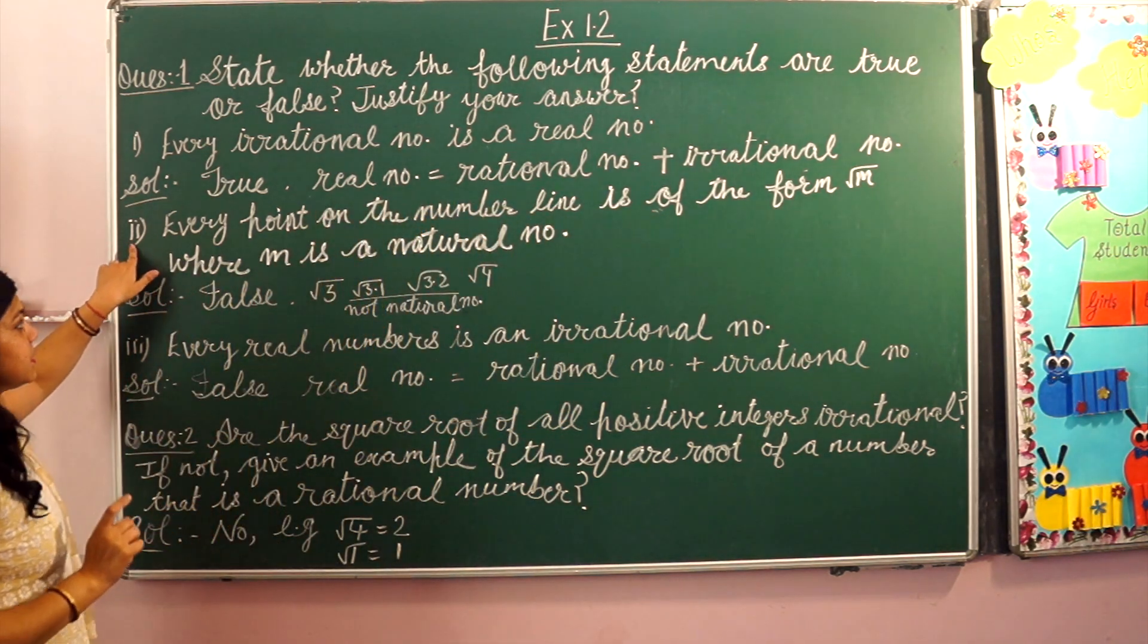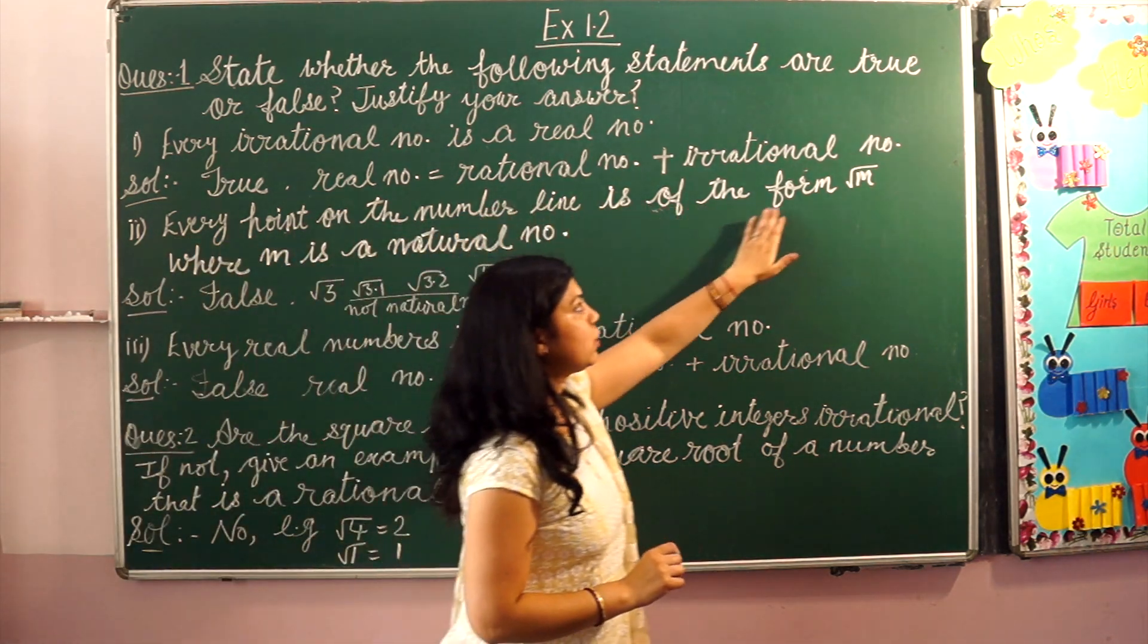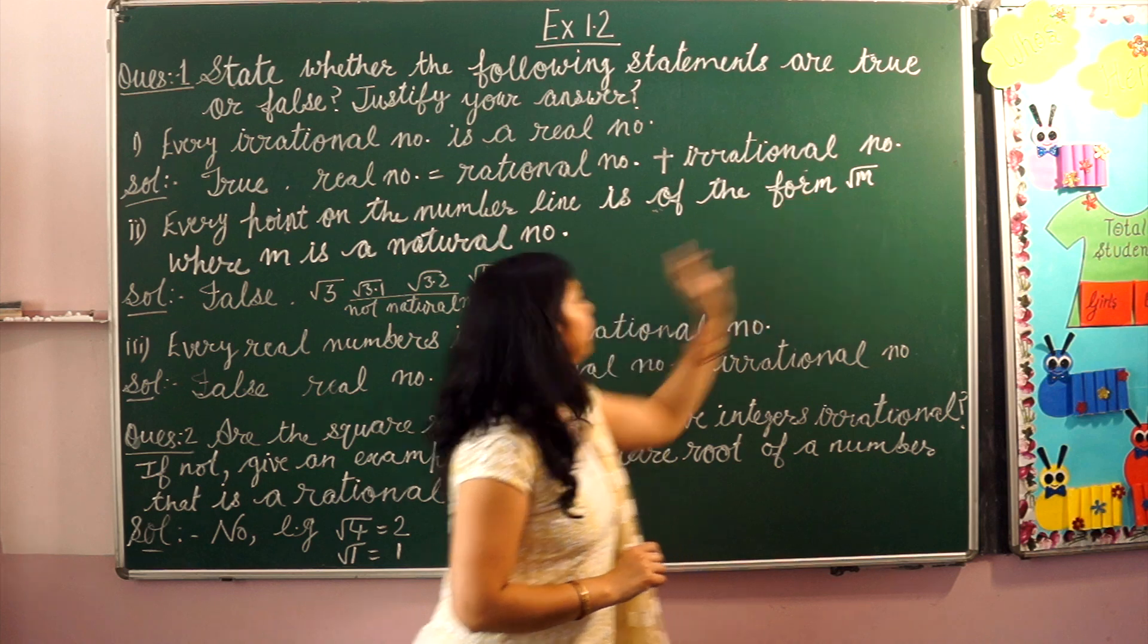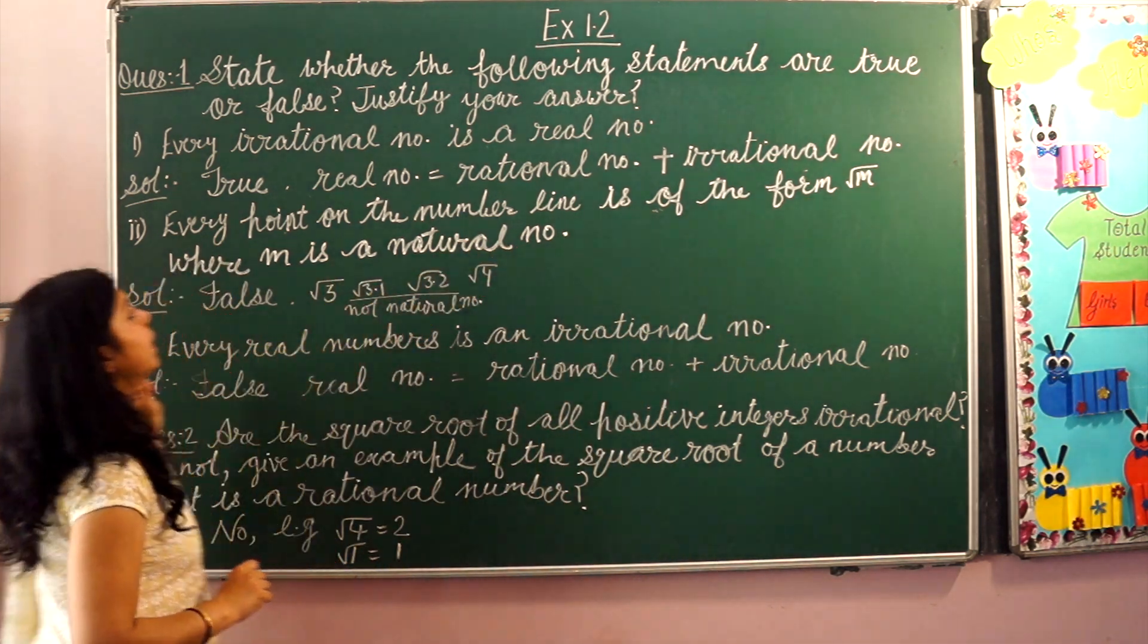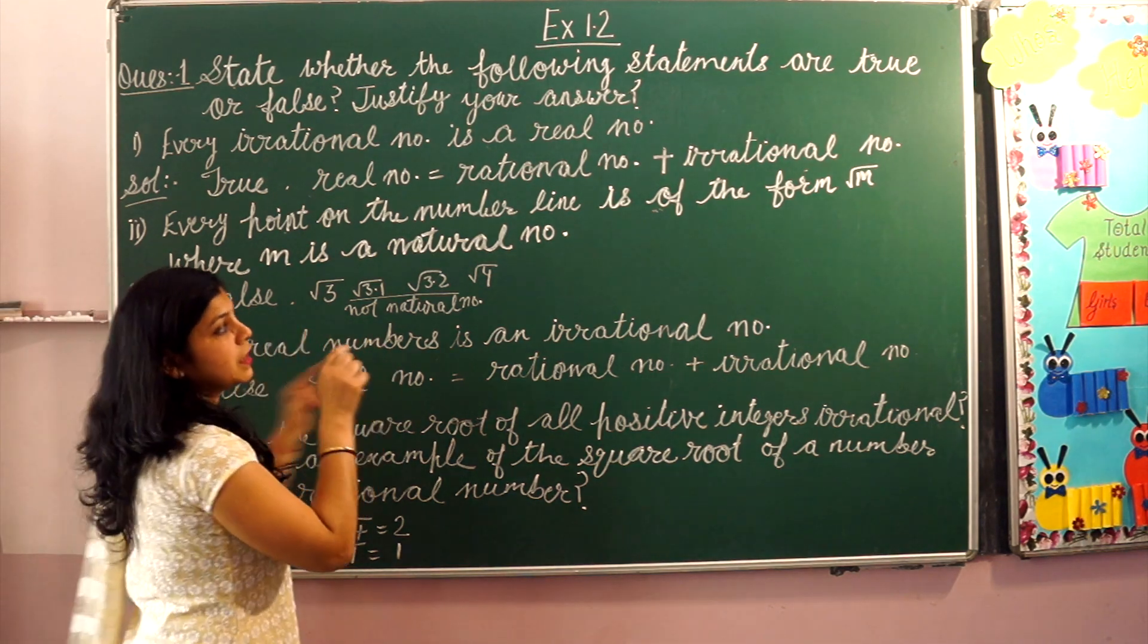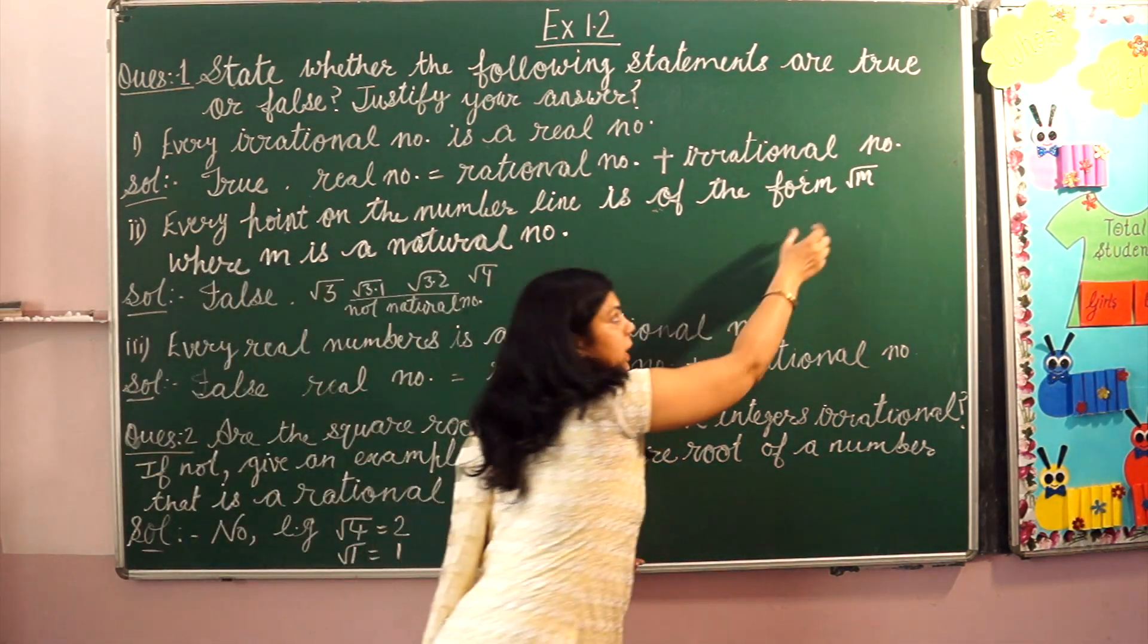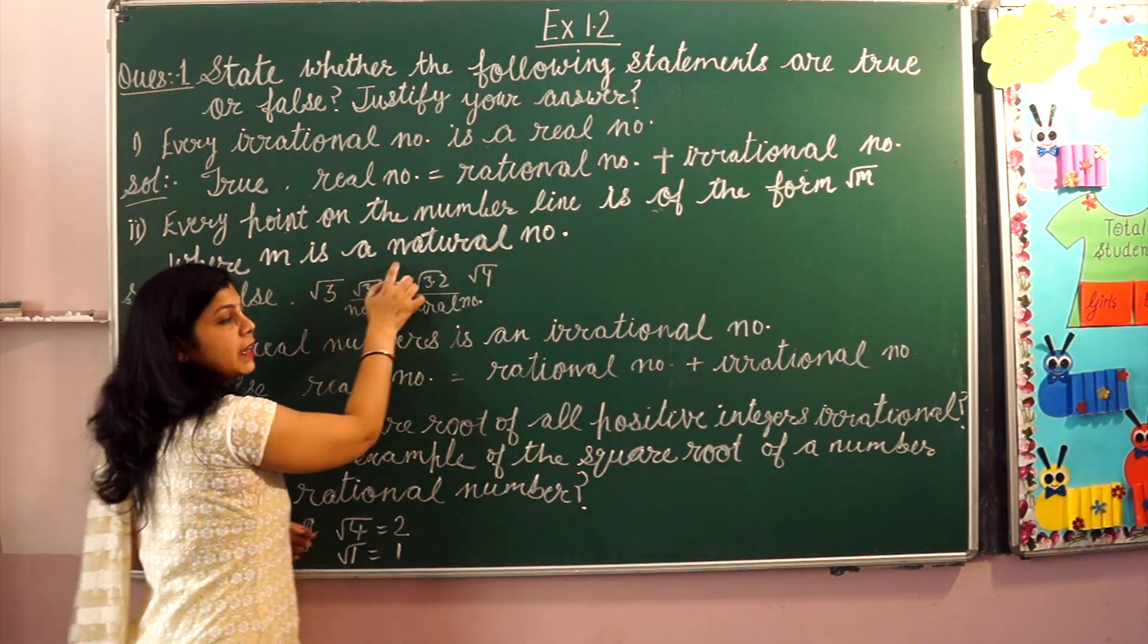Our next statement is: every point on the number line is of the form square root of n, where n is a natural number. Can we draw every point on the number line in the form of square root n where n is a natural number?